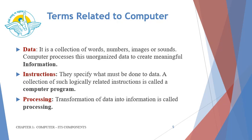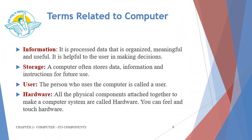The next term that you must know is processing. Transformation of the raw data into meaningful information is called processing. The next term is information. It is nothing but the processed data that is organized, meaningful, and useful. It is helpful to the user in making decisions. Storage — a computer often stores data, information, and instructions for future use.